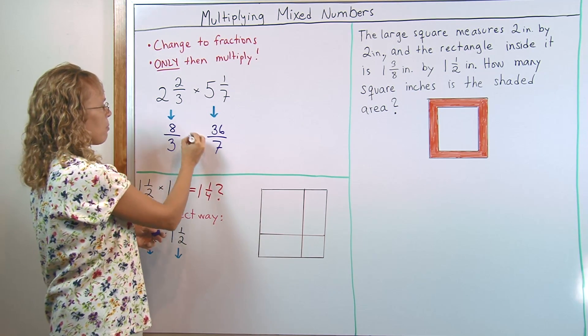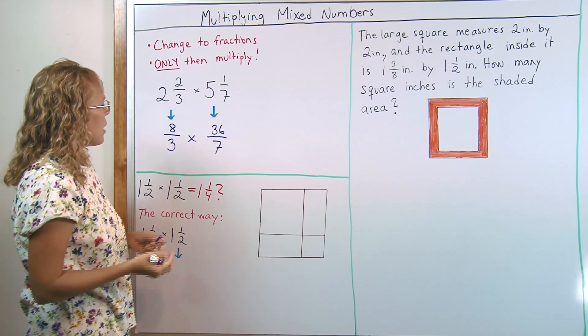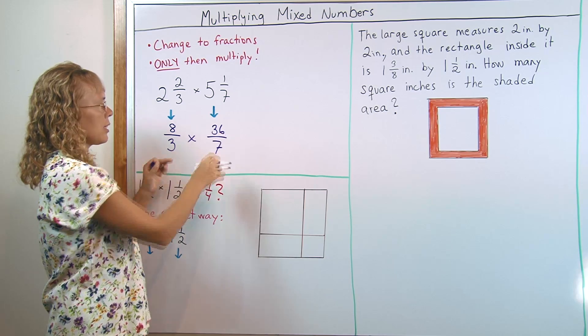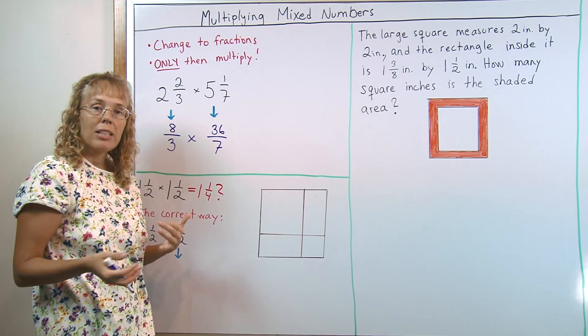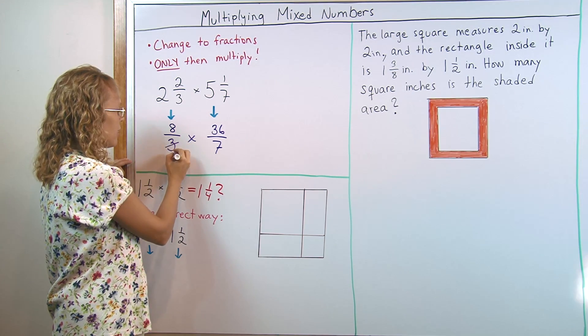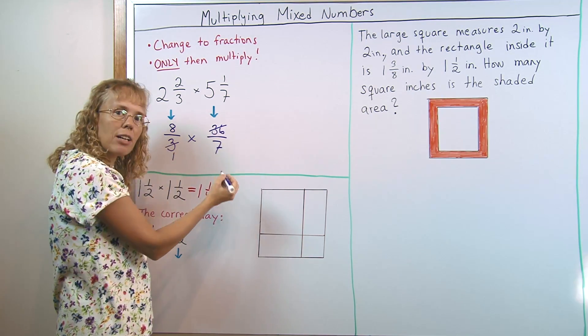Now we have fractions and we multiply. But before I multiply, I will simplify. Because 3 and 36, they simplify. Both of them are divisible by 3. So I can here divide 3 by 3, leaves me 1. 36 divided by 3 is 12.